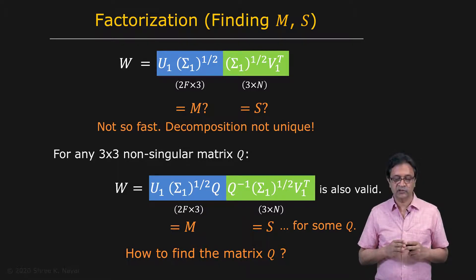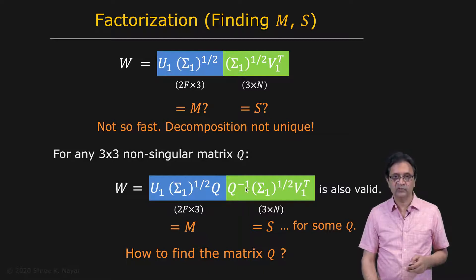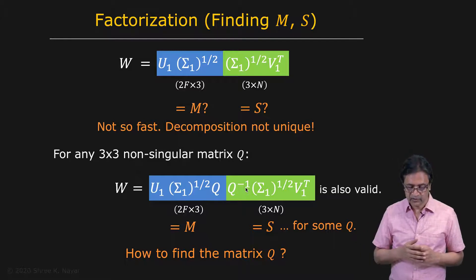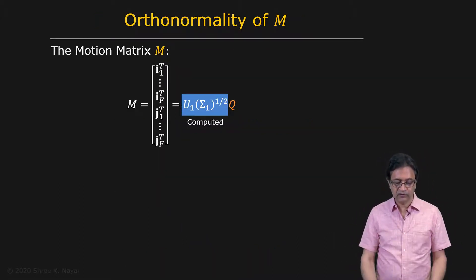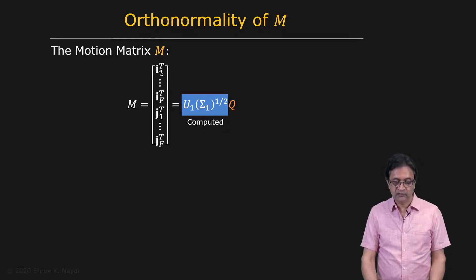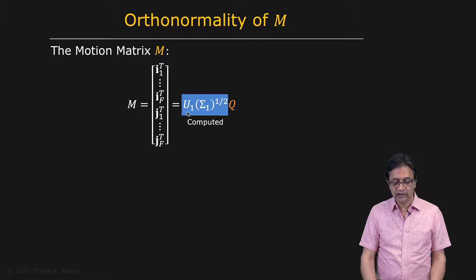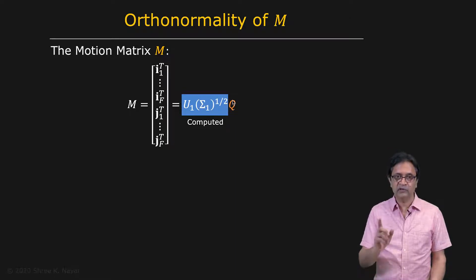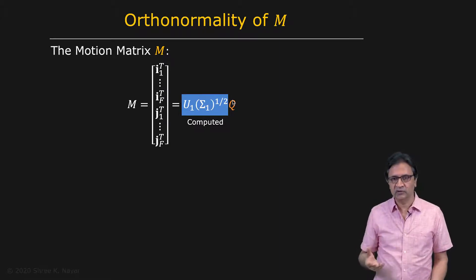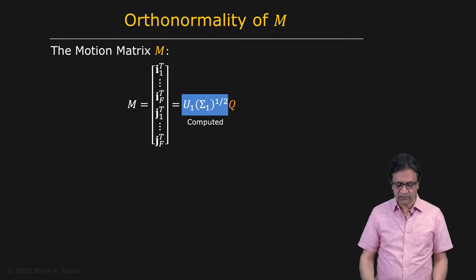The question is: how do we find matrix Q? There are constraints we haven't yet used — the orthonormality of M. The motion matrix M is simply a stacking of all the i's and j's for all F frames, where each i-j pair defines the orientation of the camera for that frame. This motion matrix equals the computed factor U1 times the square root of sigma1 times some unknown 3 by 3 matrix Q, which is what we're looking for.